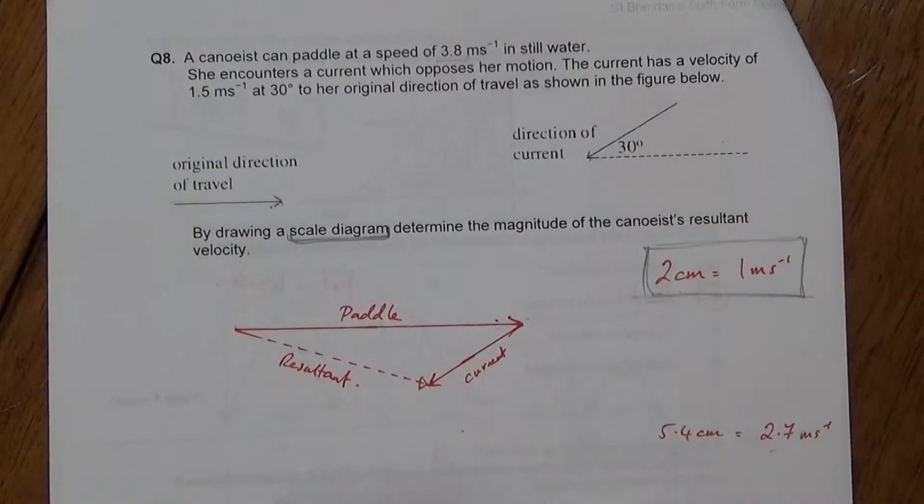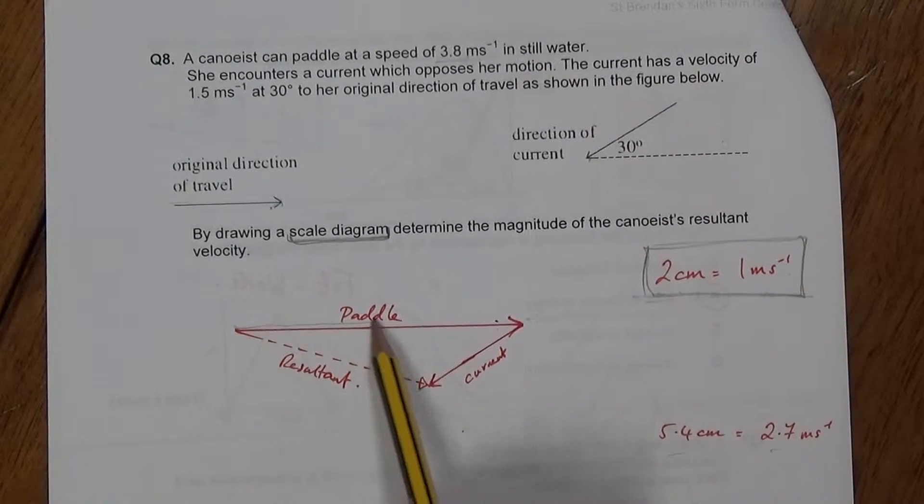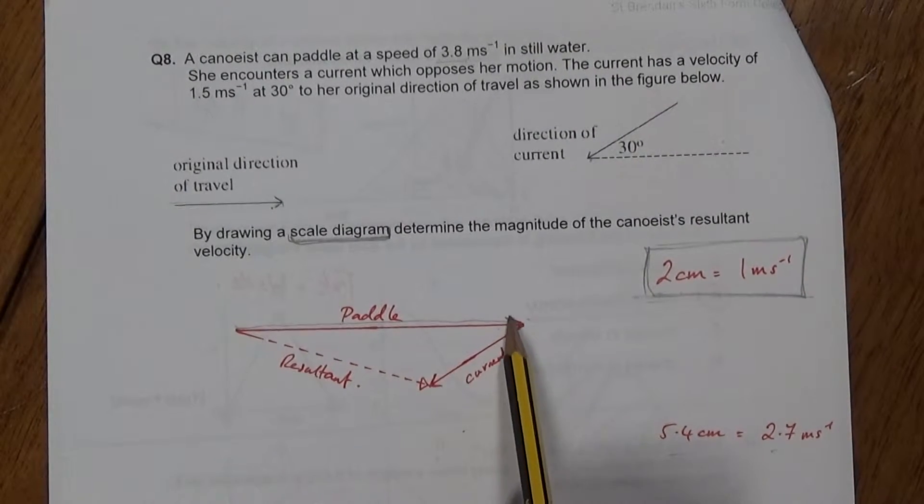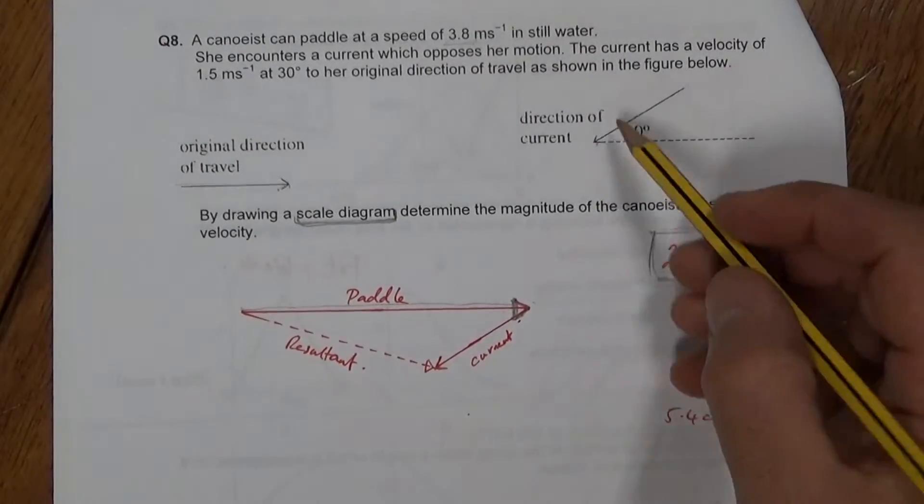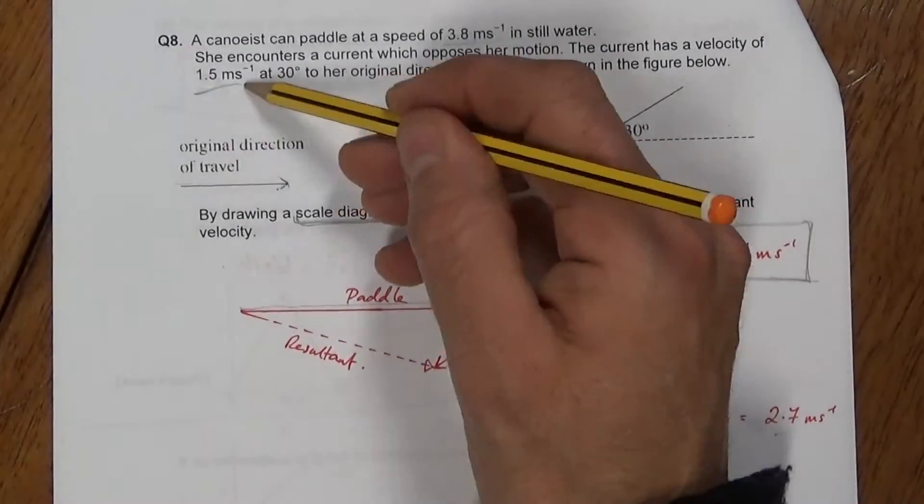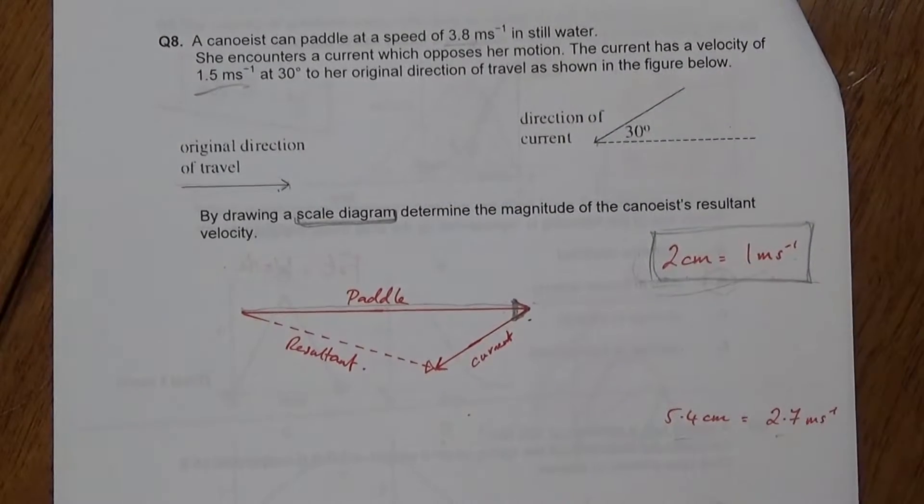We know the effect of vectors, you add them up. So this way is the velocity vector in that direction. And then we stick onto the end of it, we add on the velocity of the water. And that's 1.5 meters per second. So using my scale, that becomes 3 centimeters. Now I want to show you this.